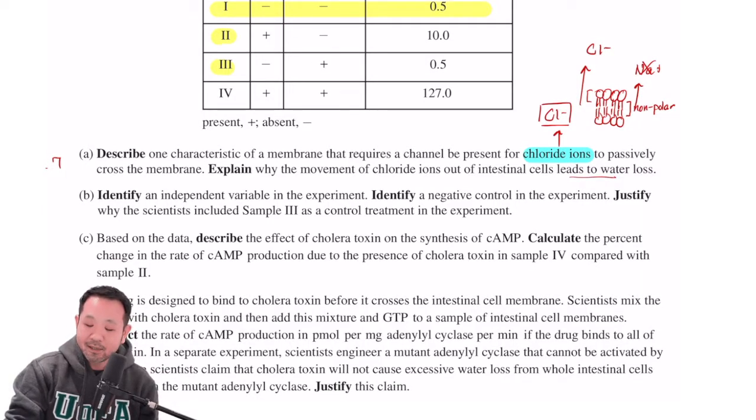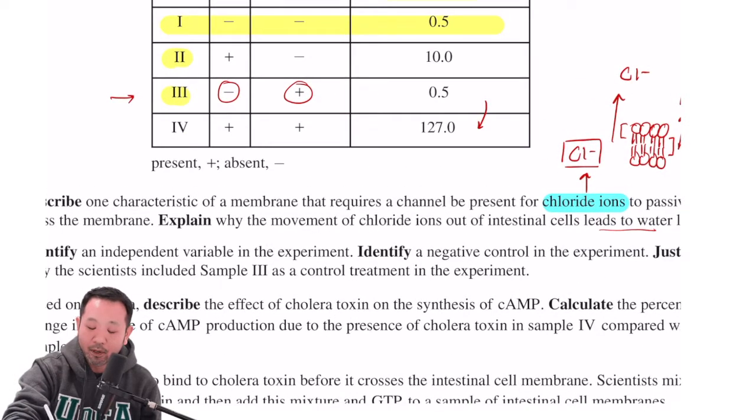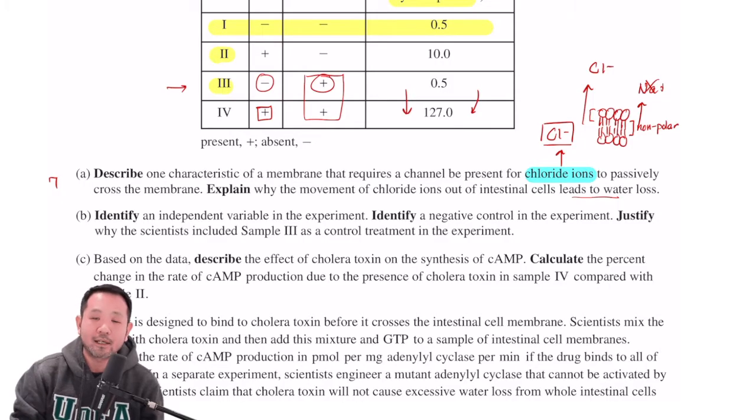Now, the last part of this B says, justify why the scientists included sample 3 as a control treatment in the experiment. Now, sample 3, as you can see, has no GTP but cholera toxin. And what we're able to do with sample 3 is to compare that against sample 4 because sample 4 contains GTP. What this means is that the cholera toxin in the absence of GTP does not actually cause a lot of increase in cyclic AMP production, meaning that we can isolate the presence of GTP or the GTP molecule itself as being a critical component of what's driving this change from 0.5 picomoles to 127 picomoles.